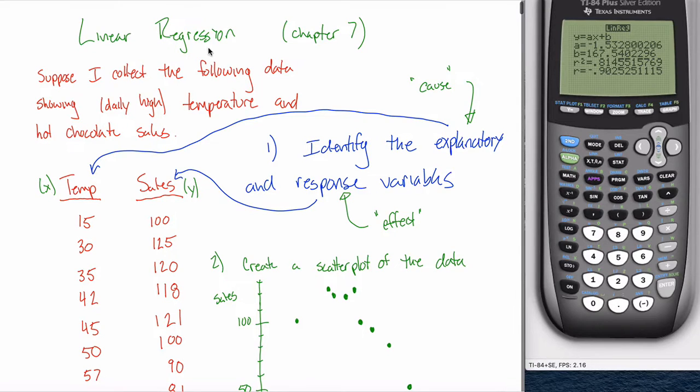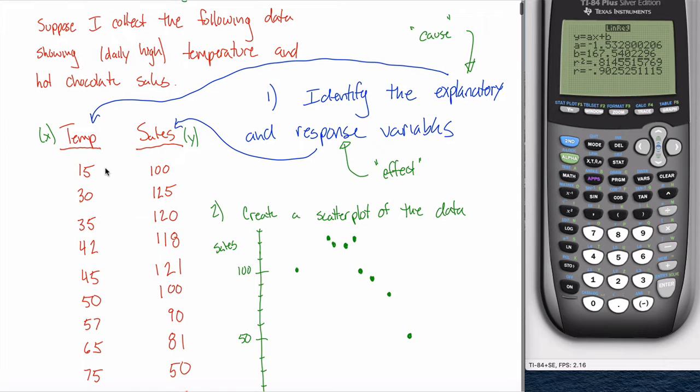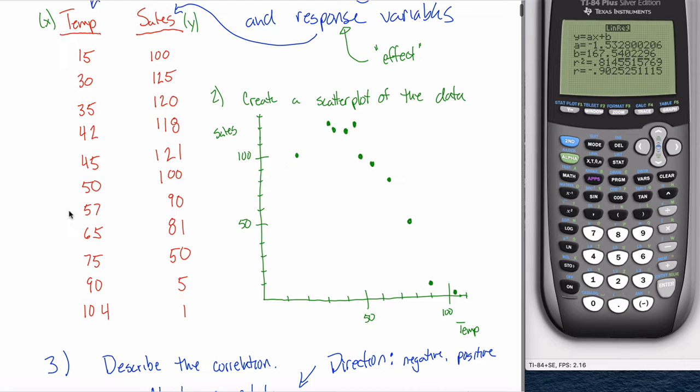All right, in this video I want to continue with our example on linear regression. In a previous video, we came up with this example about a kid selling hot chocolate on different days. We kept track of how many sales the kid made each day and the temperature on that day. We saw generally speaking that on hotter days, the kid sells less hot chocolate.